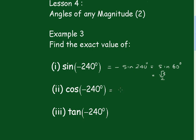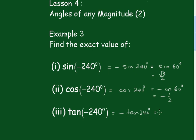Now it's going to be the cos of 240 degrees. The cos is negative in the third quadrant so it's going to be minus the cos of 60 degrees, which is minus a half. The tan of minus 240 is minus the tan of 240, but the tan is positive in the third quadrant so it's minus the tan of 60 degrees, which is minus root 3.